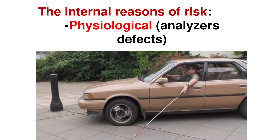The level of risk may depend on external or internal factors. An example of an external factor is ice on the road, which creates a high risk of car accidents. Most often, internal factors create problems. A common example is analyzer defects — if a person has poor eyesight or poor hearing, the risk of a car accident increases significantly. To prevent this, every person who wants a driver's license must undergo a medical examination. This is the protection of that person and other people nearby.